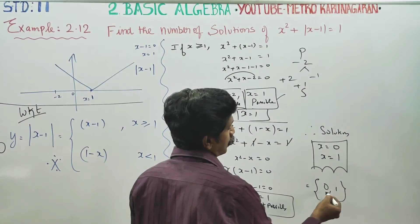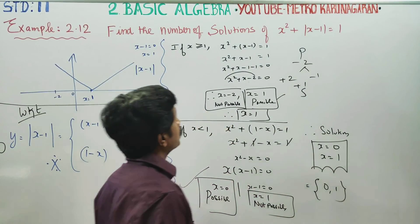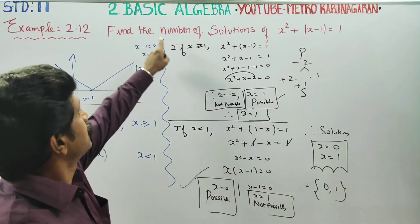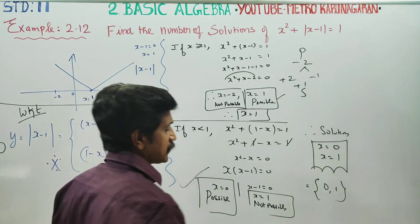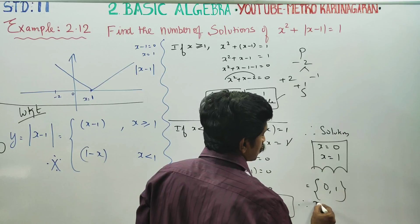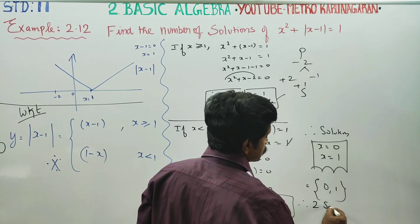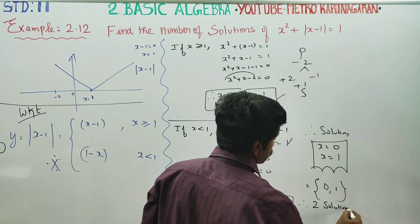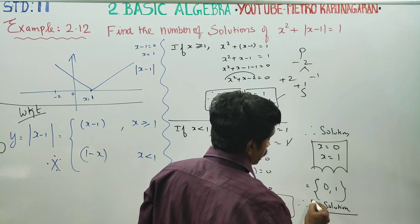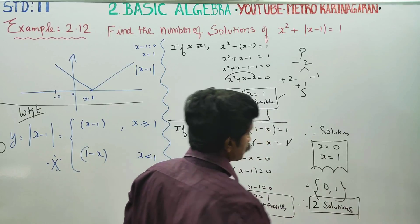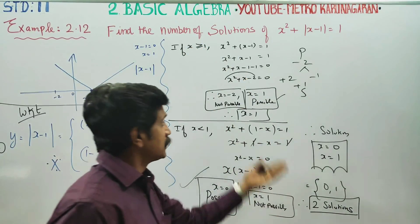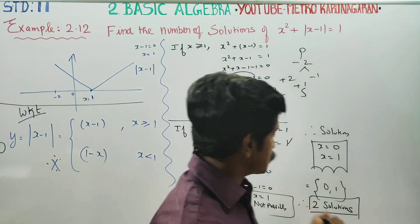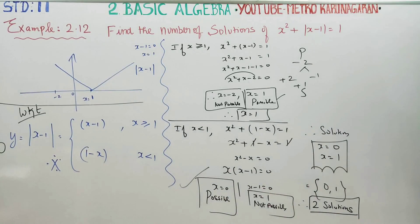I have got two solutions: 0 and 1. Find the number of solutions — therefore, two solutions will be your final answer. Therefore, this equation has two solutions. Thank you.